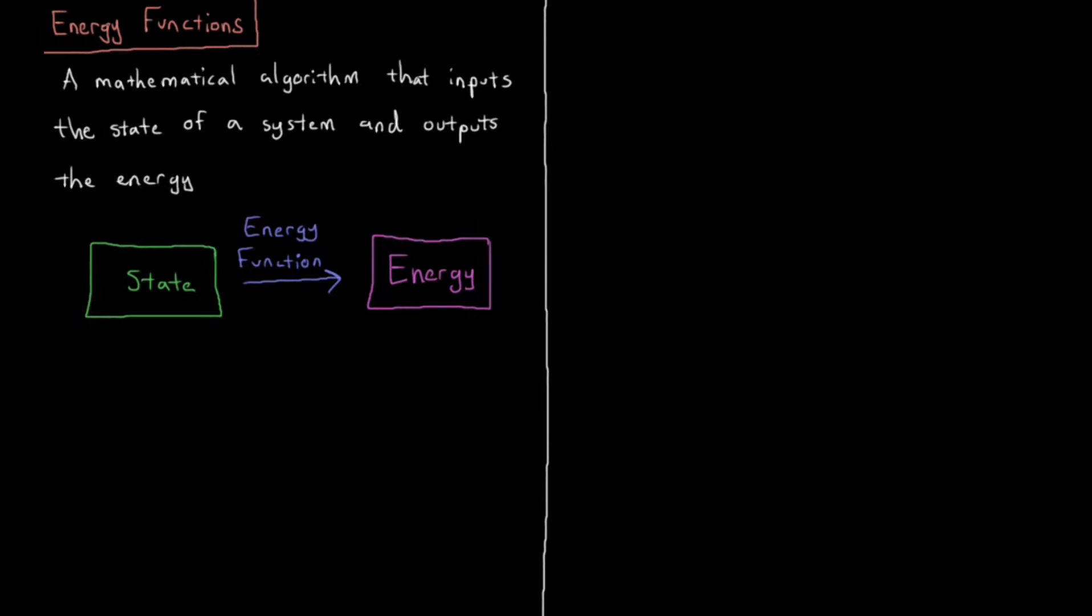Let's now define what an energy function is. An energy function is some mathematical algorithm or procedure that inputs the state of a system and outputs the energy - all the information which quantifies the state of the system and then outputs a scalar value called the energy. That's specified diagrammatically here. We have our state, then we put that through an energy function and what it returns is the energy.